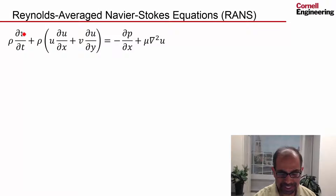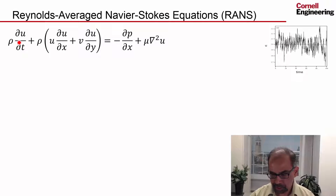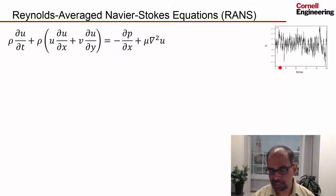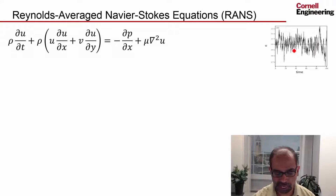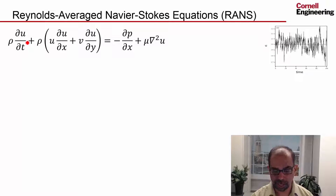We haven't really seen this term here before. It comes due to unsteadiness in the flow. The flow is not really steady because you have fluctuations, so you have to extend the Navier-Stokes to the unsteady case, and you get this extra term which involves the derivative of velocity with respect to time.